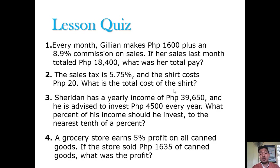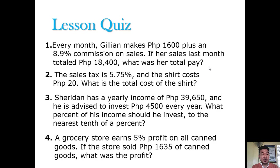Lesson quiz. Please pause this video before answering, then continue playing to check. Question 1: Every month Jillian makes 16,600 plus an 8.9% commission on sales. If her sales last month totaled 18,400, what was her total pay? Question 2: The sales tax is 5.75% and the shirt costs 20 pesos — what is the total cost? Question 3: Sheridan has a yearly income of 39,650 and is advised to invest 4,500 every year — what percent of his income should he invest, to the nearest tenth of a percent? Question 4: A grocery store earns 5% profit on all canned goods. If the store sold 1,635 worth of canned goods, what was the profit?